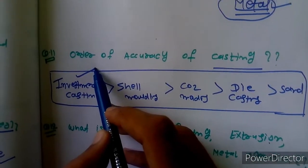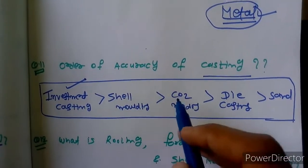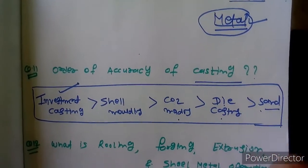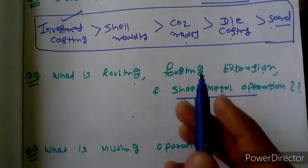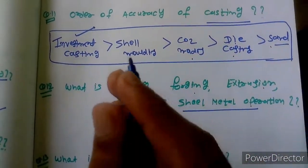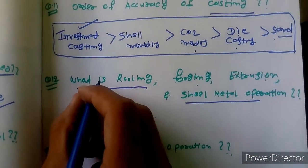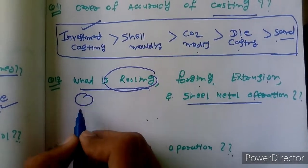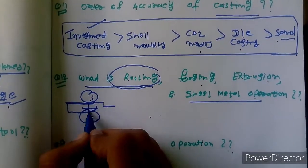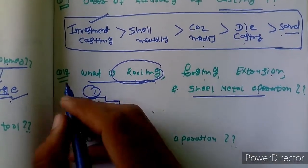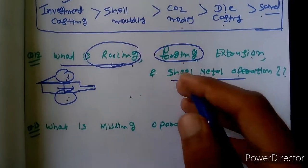The order of accuracy of casting processes: the most accurate is investment casting, followed by CO2 molding, then die casting, and then sand casting. Regarding forming processes — rolling, forging, extrusion, and sheet metal operations — these are all forming processes where you form a new product from existing material. In rolling, you pass a sheet between two rollers and the thickness automatically decreases. Rolling is used to decrease the thickness of a plate.